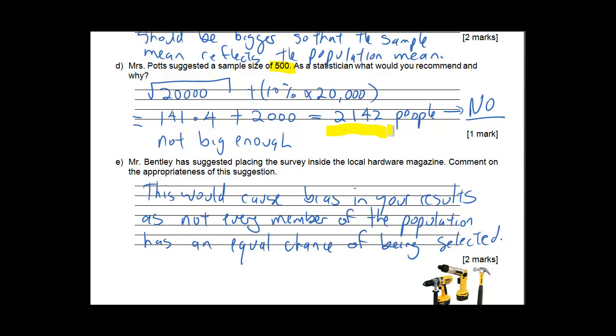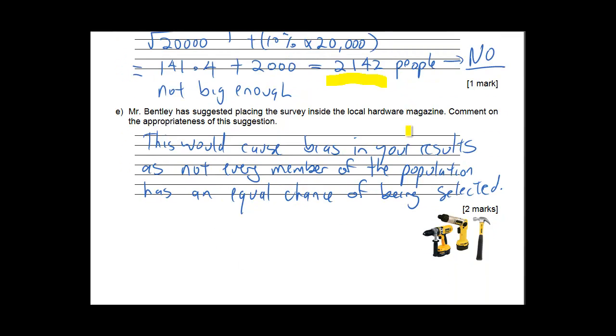Add the two together and you get 2,142. So is his selection of 500 right? No, it's not. It's way too short. It's way too small. So he needs to have at least 2,142 people there. It's just a guide that tells you how many you should have. But that's kind of what we're using here.